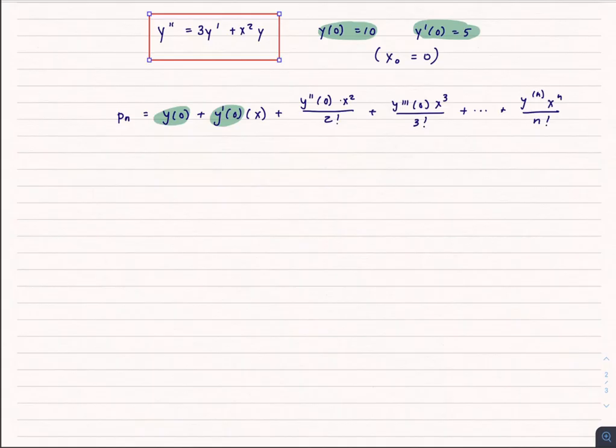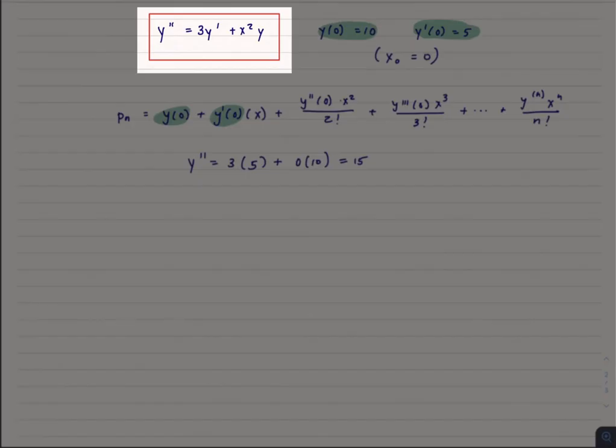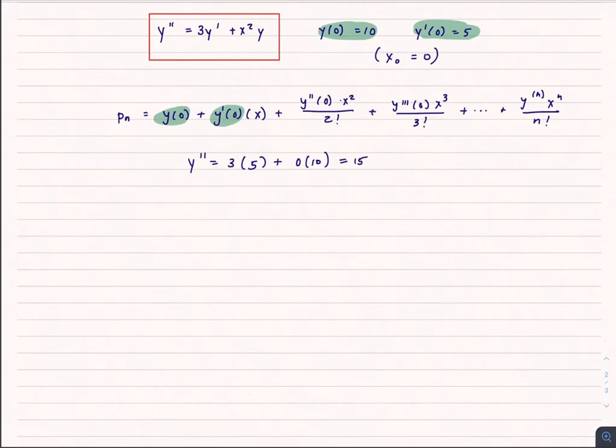Again, these are at initial conditions, so my x0, my x naught, is actually zero. So to find y'', I just plug in the y' and y values that I have for initial conditions into my equation up there in the box. And I get that y'' is 3 times 5, since that's the first derivative of y evaluated at zero, plus zero, since x is zero, times 10, or that equals 15. And I can take the derivative of both sides of this and get the next step.